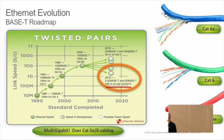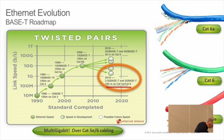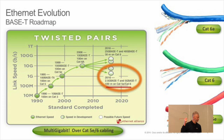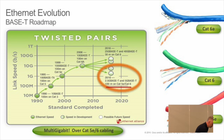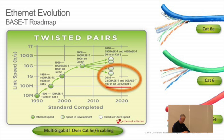In 2006 we got 10GBase-T on Cat6A. 5E is there, Cat6 is sort of in the middle, and 6A is the big nice stuff. It's interesting because 2006 is a decade ago — why hasn't it taken over?